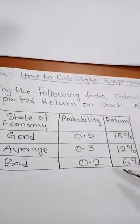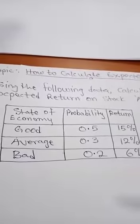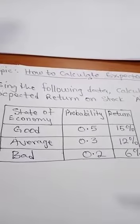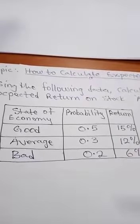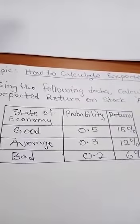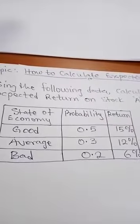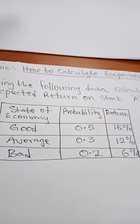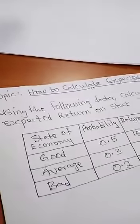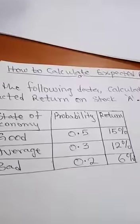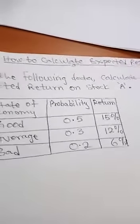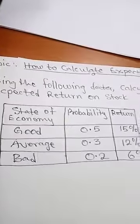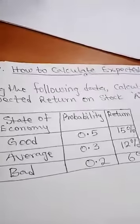Therefore, using this information, how do we calculate the expected return? Now, expected return is simply an average return. Using both the probability and the return, we calculate the expected return. How do we do that? The formula is simple.